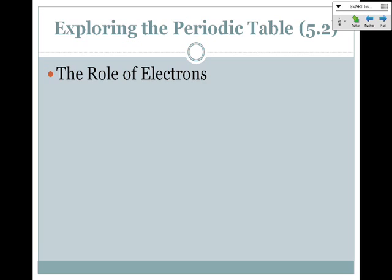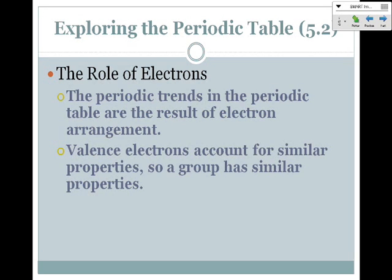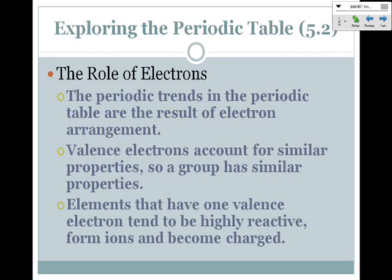Now we're going to look at the role electrons play in the periodic table and how they affect the periodic trends and chemical properties of elements. The periodic trends are trends that happen across or down the periodic table, and they are the result of electron arrangement. Valence electrons are those on the outermost energy level of an atom or element. If you have the same number of valence electrons, then you have similar properties. A group or family is going to have similar chemical properties. Elements that have one valence electron tend to be highly reactive and form ions very quickly and become charged.